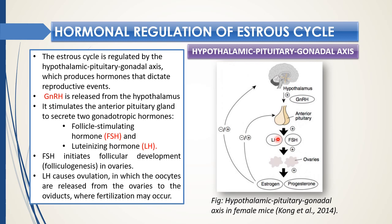Follicle-stimulating hormone is responsible for folliculogenesis — the development of follicles inside the ovaries. Luteinizing hormone is very important for ovulation to occur. Both these hormones control production of the most important steroids — estrogen and progesterone — from the ovaries. Ovarian follicles are under the control of LH and FSH in regards to follicular development, ovulation, and production of steroids. These steroids act on the uterus from the beginning of the cycle.